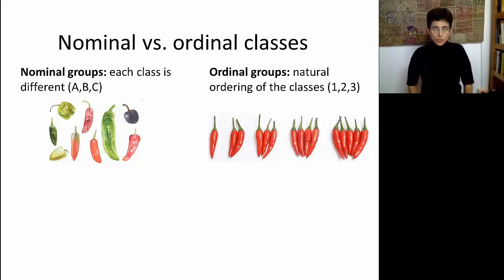Before we move into more than two groups, we have to notice that now it's going to matter whether the categorical variable y is nominal or ordinal. Nominal means that each class is simply different from another class, such as color. Ordinal means that there is some ordering between the classes: small, medium, and large.